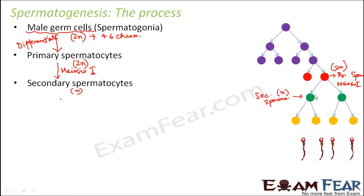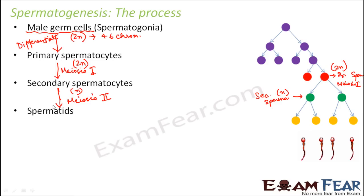These secondary spermatocytes further undergo meiosis 2, and as a result, a total of 4 spermatids are produced. These spermatids are also haploid.